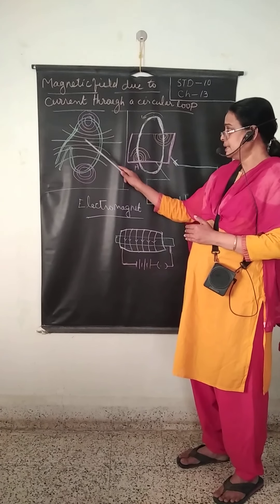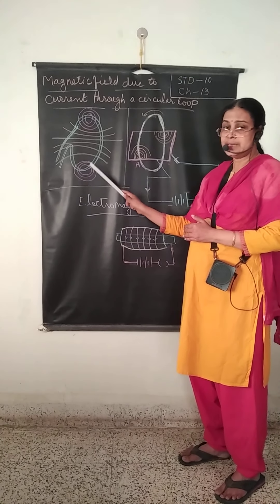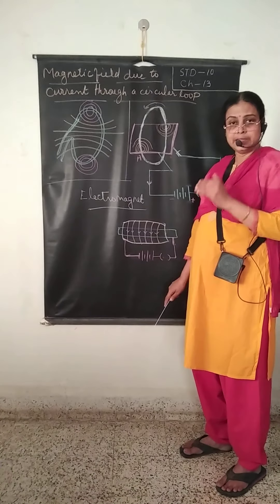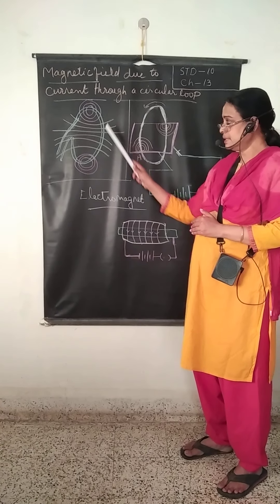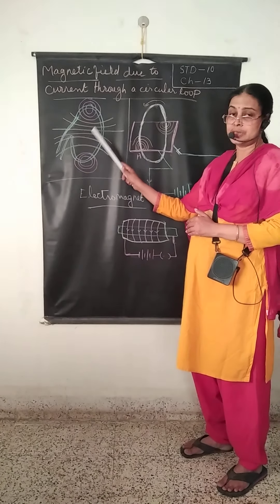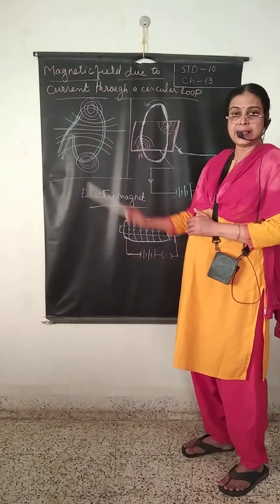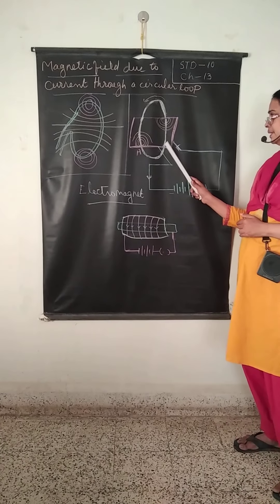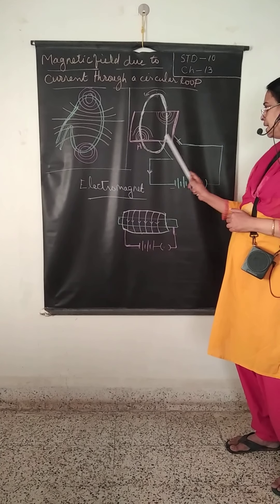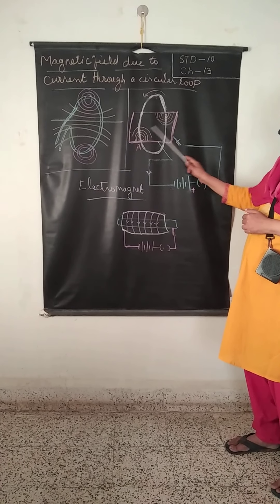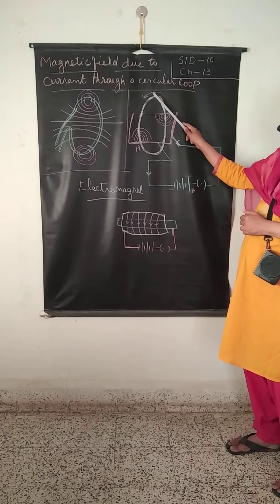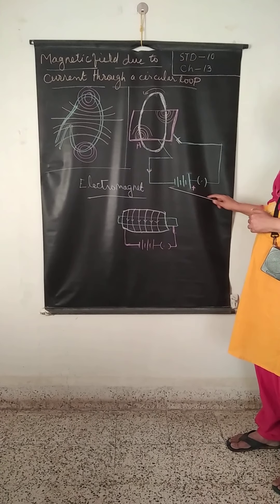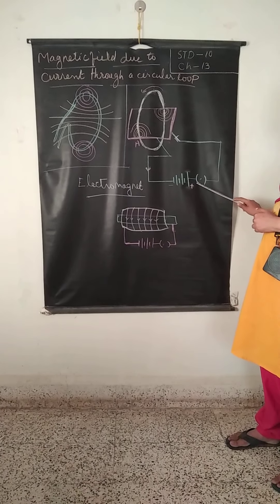This is because the current passing through each loop moves in the same direction and it is added to the magnetic field. In another experiment, there is a cardboard in which a circular loop is inserted and it is connected with a battery and a key.